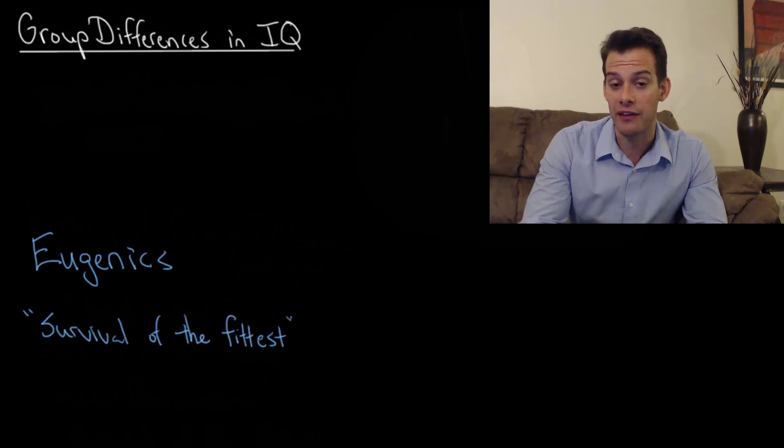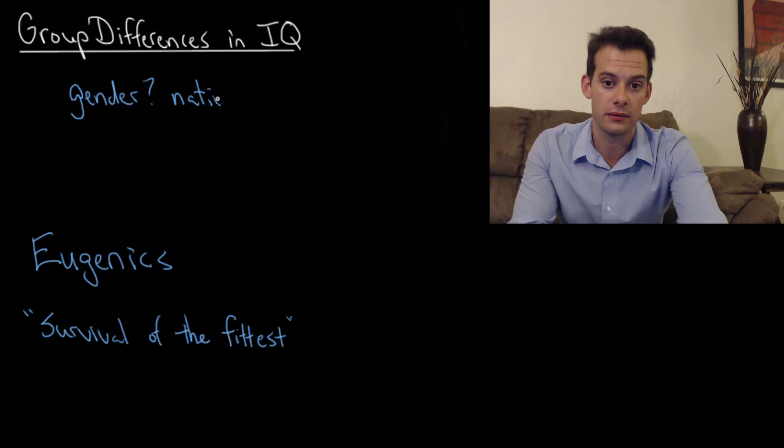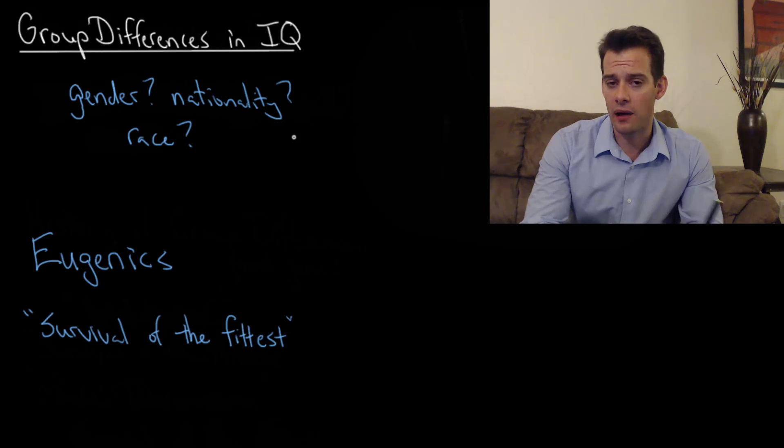But what if we start making assumptions about people and their IQs based on other group differences? What if we start thinking about things like gender or nationality or race? We have to be careful here because it might seem like our societal ideals are in conflict with our desire for scientific objectivity. We might say that we want to uphold a societal ideal that all groups are equal. We have an ideal of total equality and yet our desire for scientific objectivity suggests that we need to collect the data in order to find out. And this means that we might find things that we don't want to find.